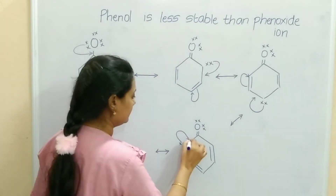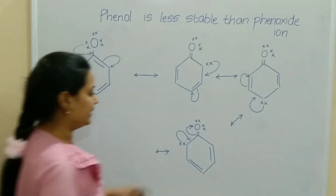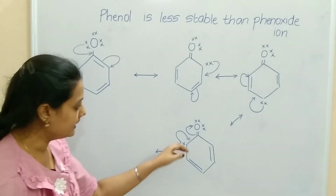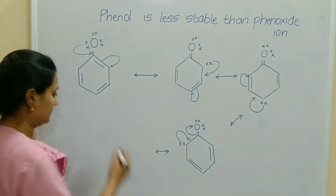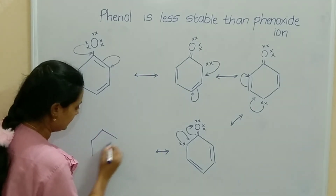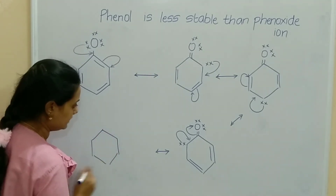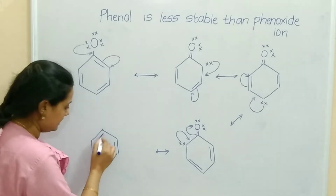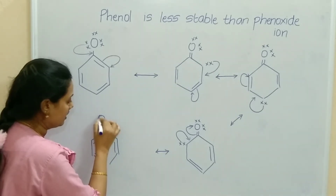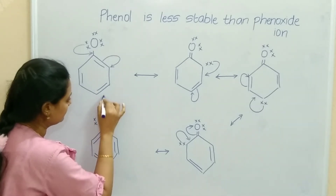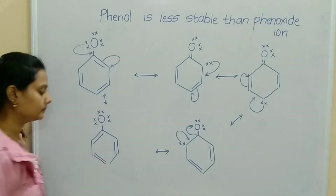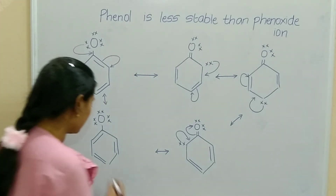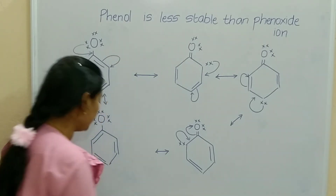The next resonating structure: electrons will form a bond to the next side and the bond will form the electrons. The last resonating structure: this bond as it is, here as it is, here one bond, single bond, oxygen. Counting: 1, 2, 3, 4, 5, 6 — and these two are also interconvertible. These are the resonating structures of phenoxide ion.